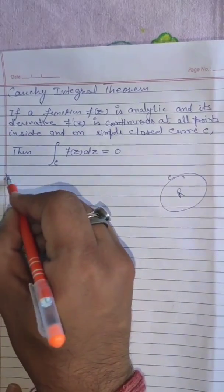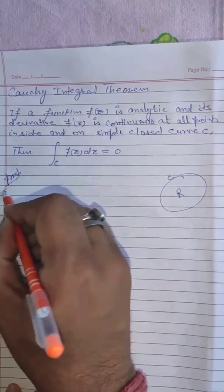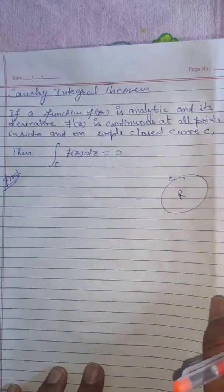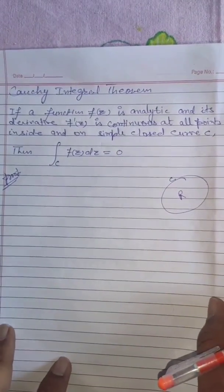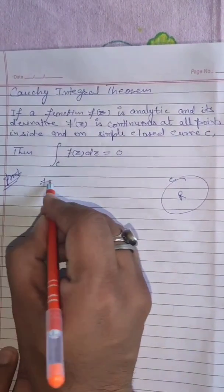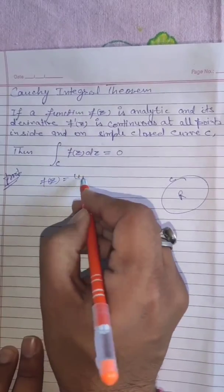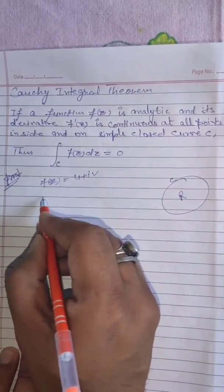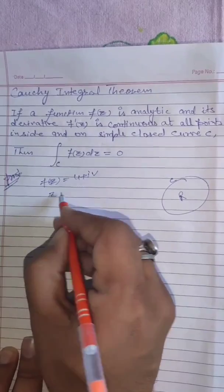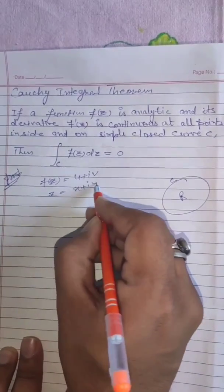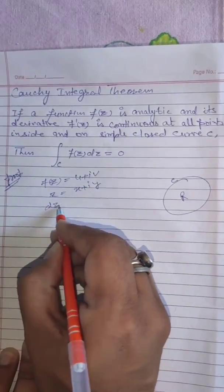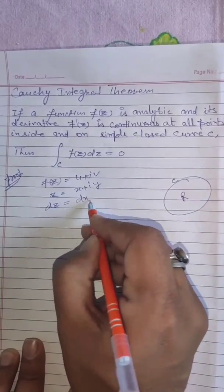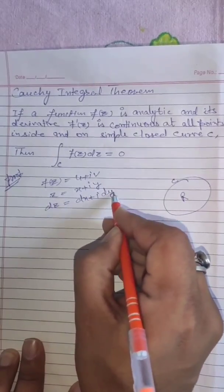Now we prove this theorem. Here we suppose that f(z) equals u plus iv, and we know z is always x plus iy, and we take the derivative dz equal to dx plus idy.